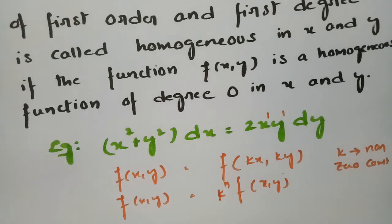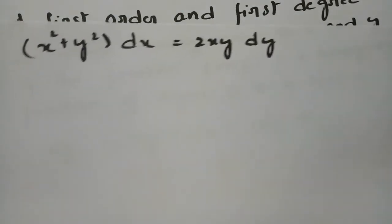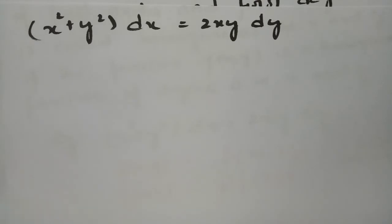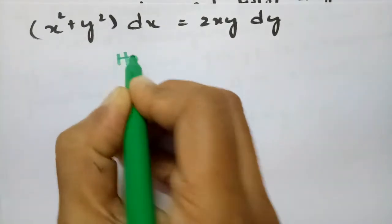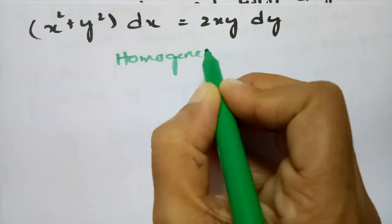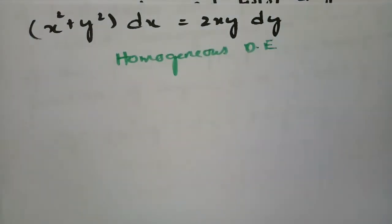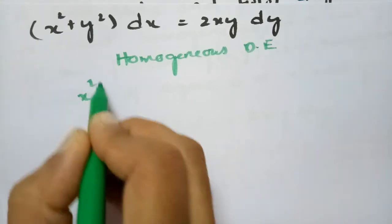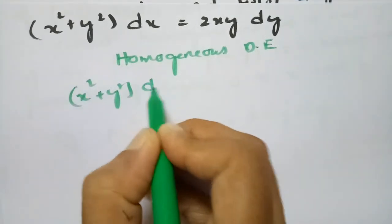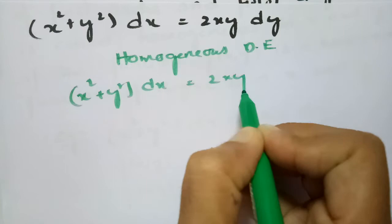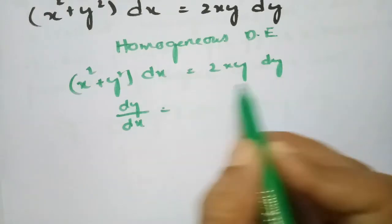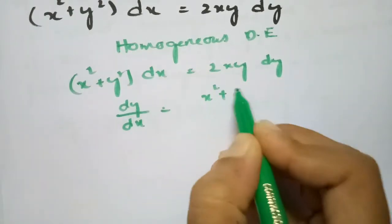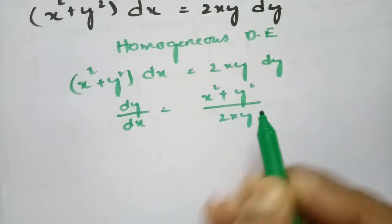Now let's get started with the process to solve this homogeneous differential equation. We observe the equation has degree 2, degree 2, and here also degree 2, confirming it is homogeneous. We write (x² + y²)dx = 2xy dy, which can be rewritten as dy/dx = (x² + y²) / 2xy.